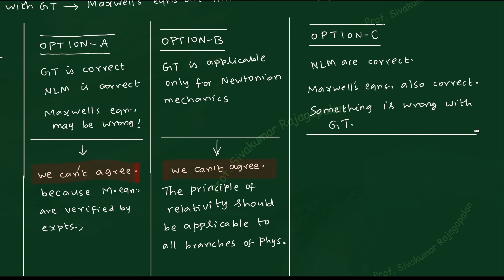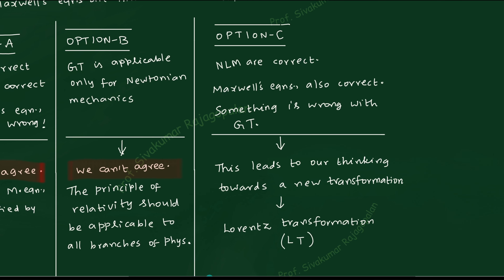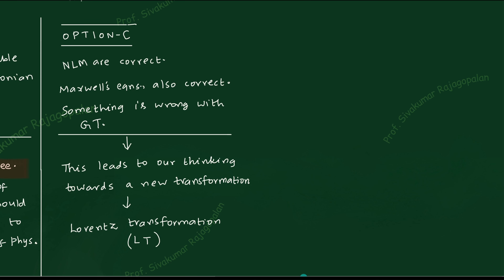Now can we accept this argument? Most probably yes — you don't have a reason to reject it. If you don't want to agree, you have to provide a valid reason, and in this case you can't easily say you reject it. If the Galilean transformation is not applicable to one branch of physics, you'll have to think — why not discover a new transformation? That kind of thought gave the fruitful result known as the Lorentz transformation. So the problem with the Galilean transformation led to the discovery of the Lorentz transformation.